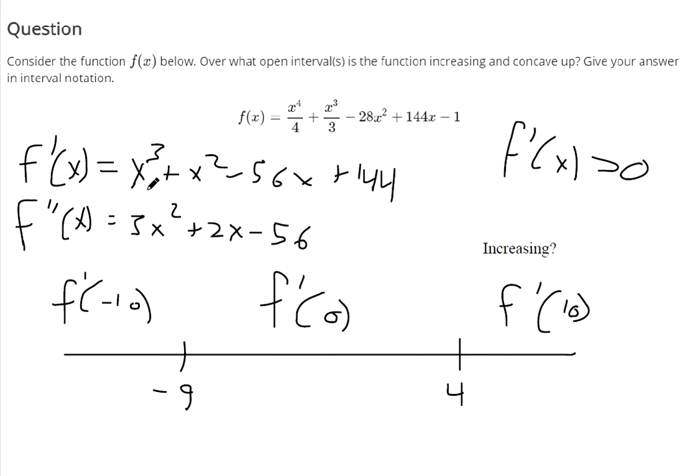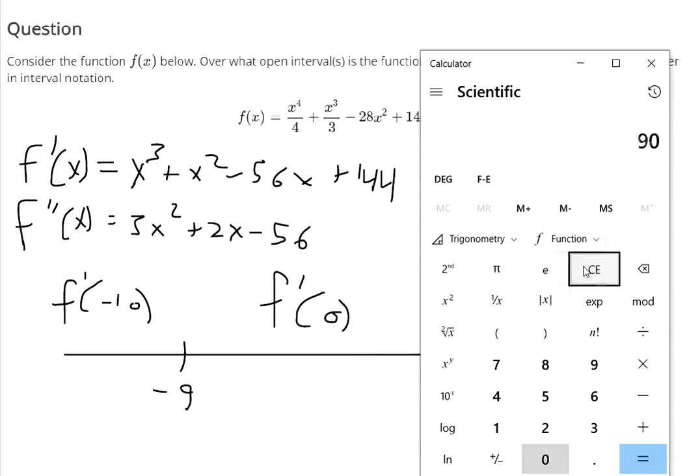So if you plug negative 10 into the first derivative, you get negative 1000 plus 100 makes negative 900. Let's take out the calculator. Negative 900. And then negative 10 times negative 56 makes 560, so positive 560, and then plus 144.